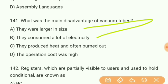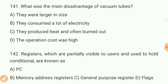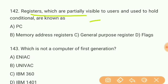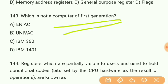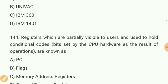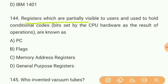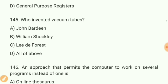Question 141: What was the main disadvantage of vacuum tubes? Answer C — they produced heat and often burned out. Question 142: Registers which are partially visible to users and used to hold conditional codes are known as what? Answer C — general purpose registers. Question 143: Which one is not a computer of the first generation? Answer D — IBM 1401 is not a first generation computer.